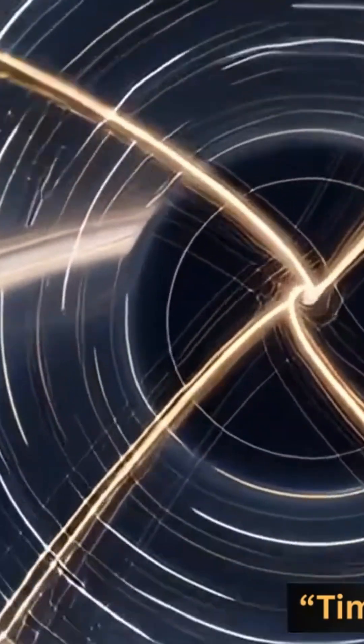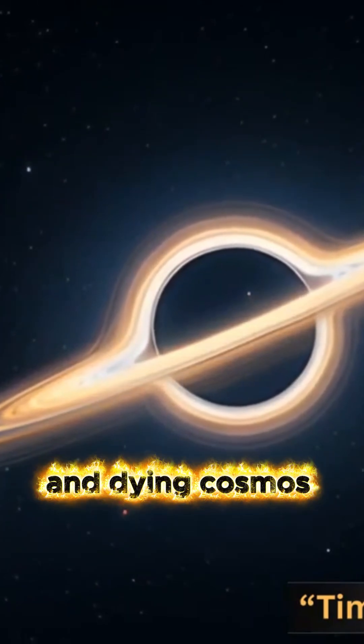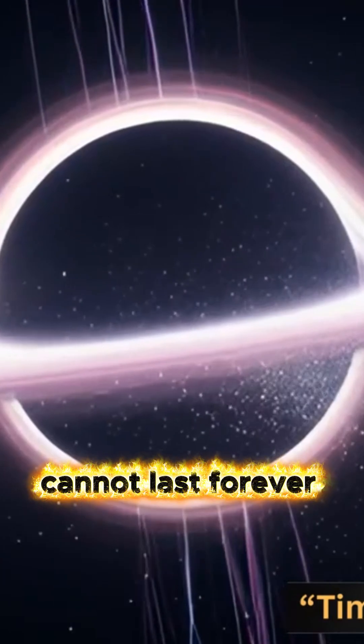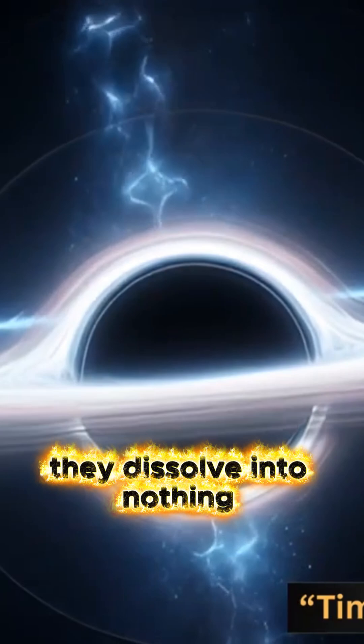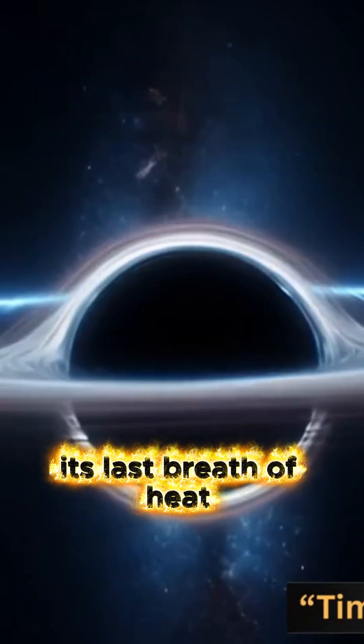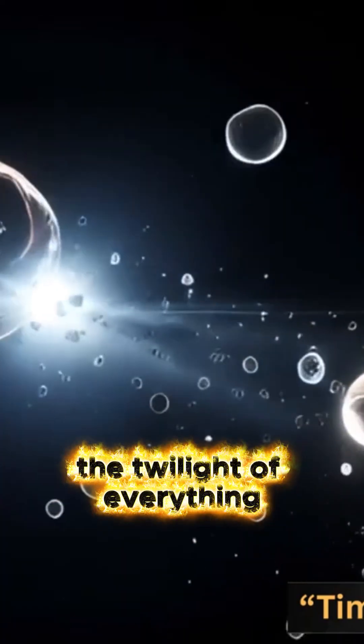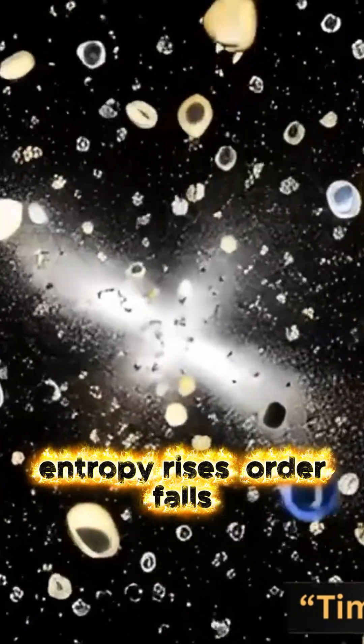For a trillion years, black holes reign over a dark and dying cosmos. But even the kings of gravity cannot last forever. One by one, they dissolve into nothing. The universe sighs its last breath of heat. This is the black hole era, the twilight of everything that was. Entropy rises, order falls.